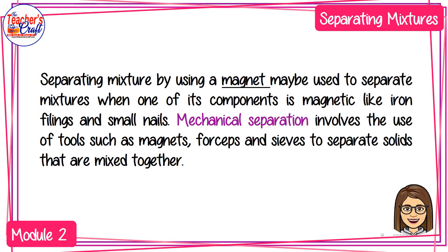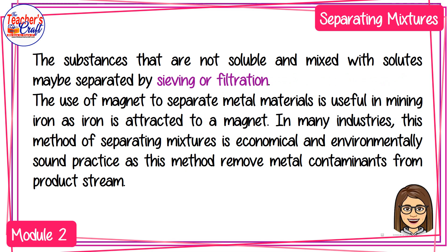A magnet may be used to separate mixtures when one of its components is magnetic, like iron filings and small nails. Mechanical separation involves the use of tools such as magnets, forceps, and sieves to separate solids that are mixed together. Substances that are not suitable when mixed with solutes may be separated by sieving or filtration.